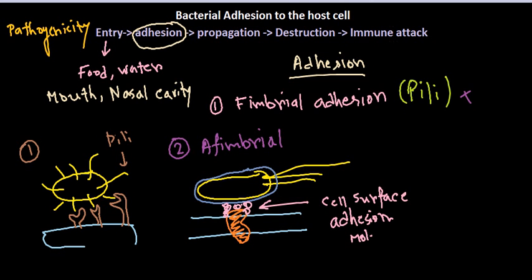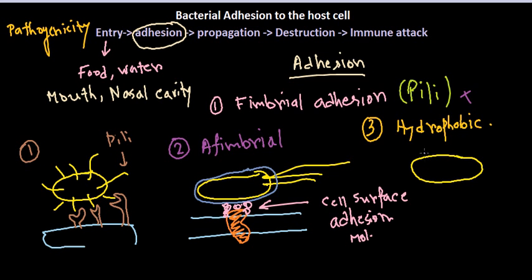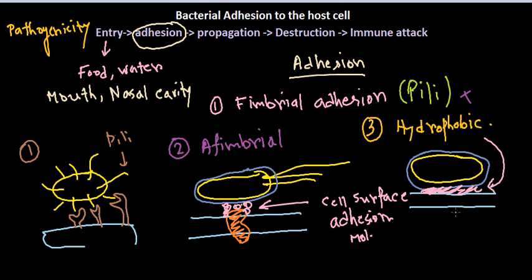The third way of interaction is via hydrophobic interaction. In this case, if we draw the bacterial cell with its cell wall and the host cell nearby, there is a direct interaction between the bacterium and the host cell through what we know as hydrophobic forces.